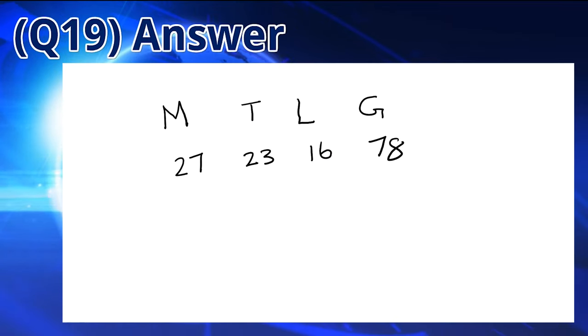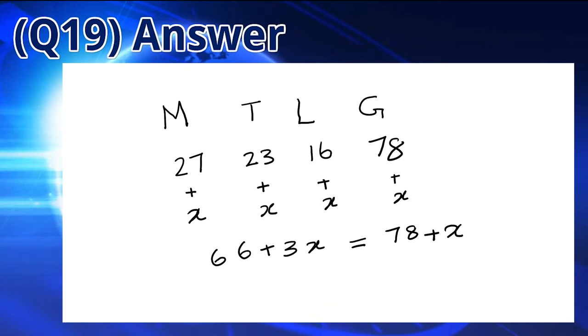The sum of all the grandchildren's ages is 66 and the grandfather's age is 78. After X years, the total of all the grandchildren's ages is 66 plus 3X. This is equal to the grandfather's age after X years which can be represented as 78 plus X. We get an equation where 66 plus 3X equals 78 plus X. Solving this equation, we get that X equals 6, which means the answer is B.